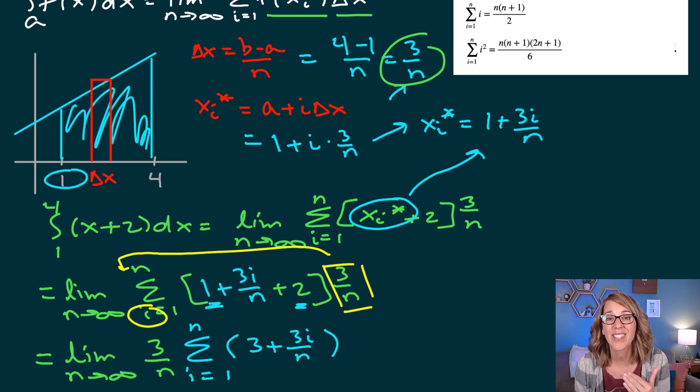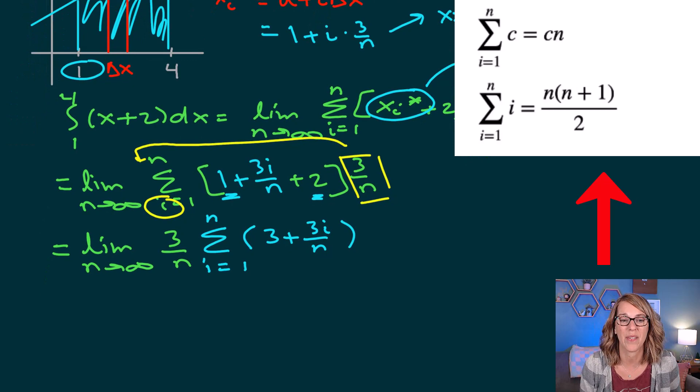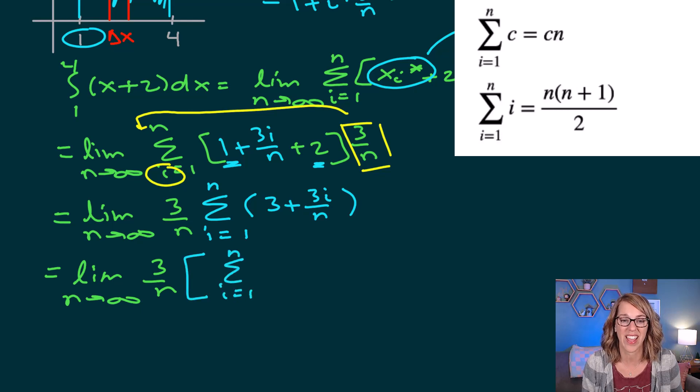Now I want to apply some of these formulas that I've got up here. I want the sum of 3, and I want the sum of 3i over n. I'm going to break that summation apart so that you can see how it looks. I still have the limit out in front, so limit n goes to infinity 3 over n. And here comes my summation. I'm going to apply the summation to 3, 1 to n of 3. That's going to be 3 plus 3 plus 3 plus 3, and there are n of those. So that's going to become 3n.